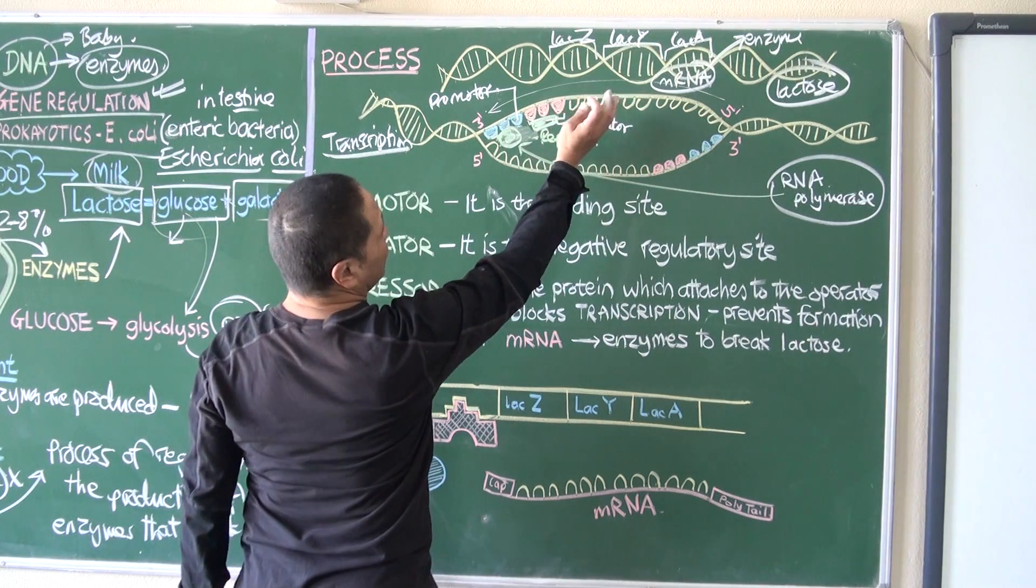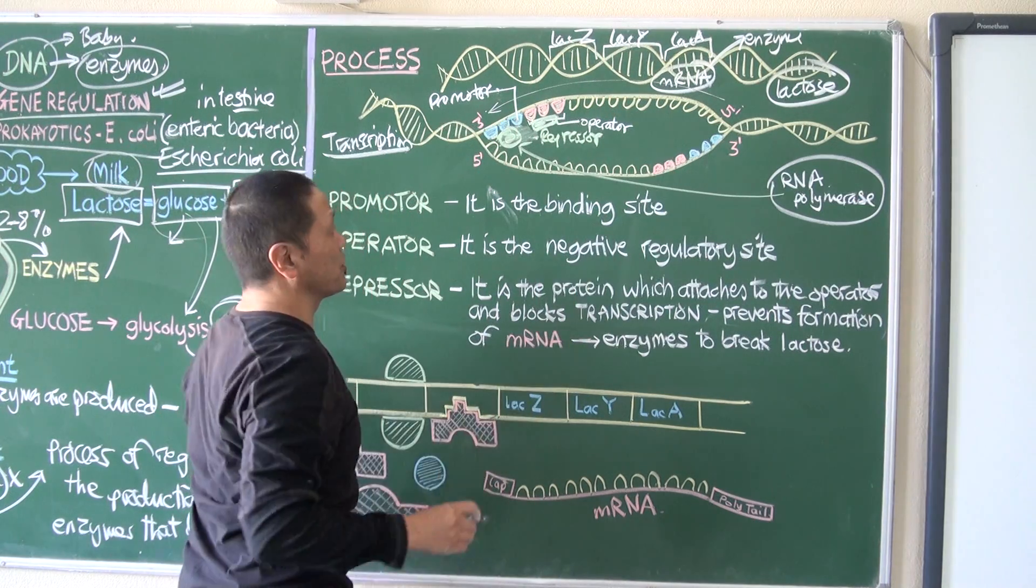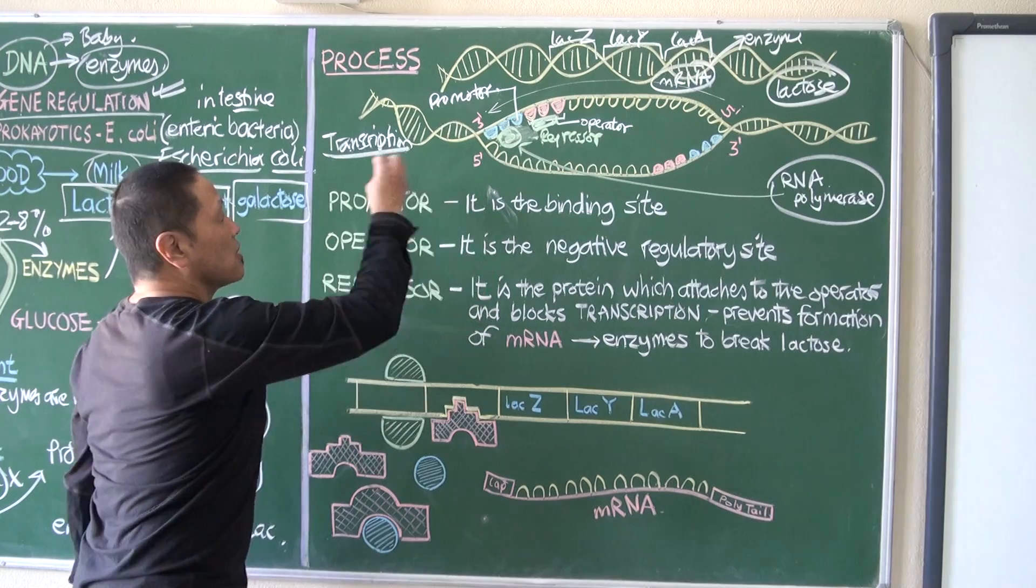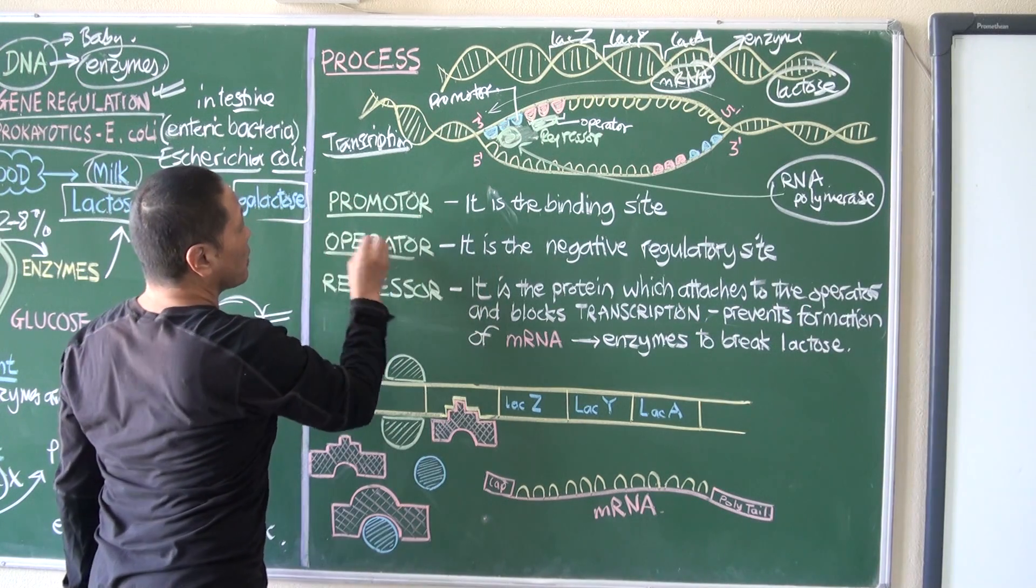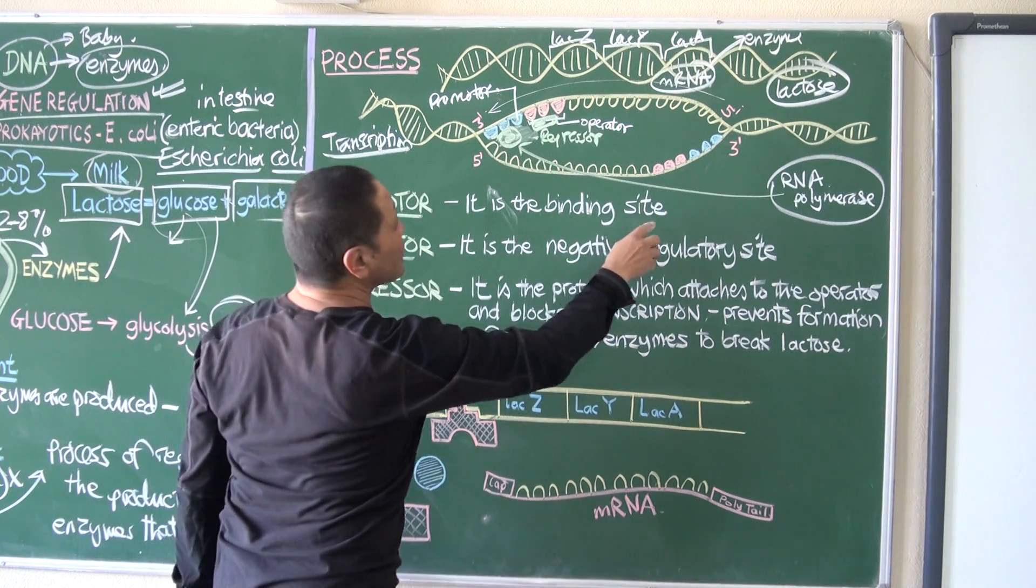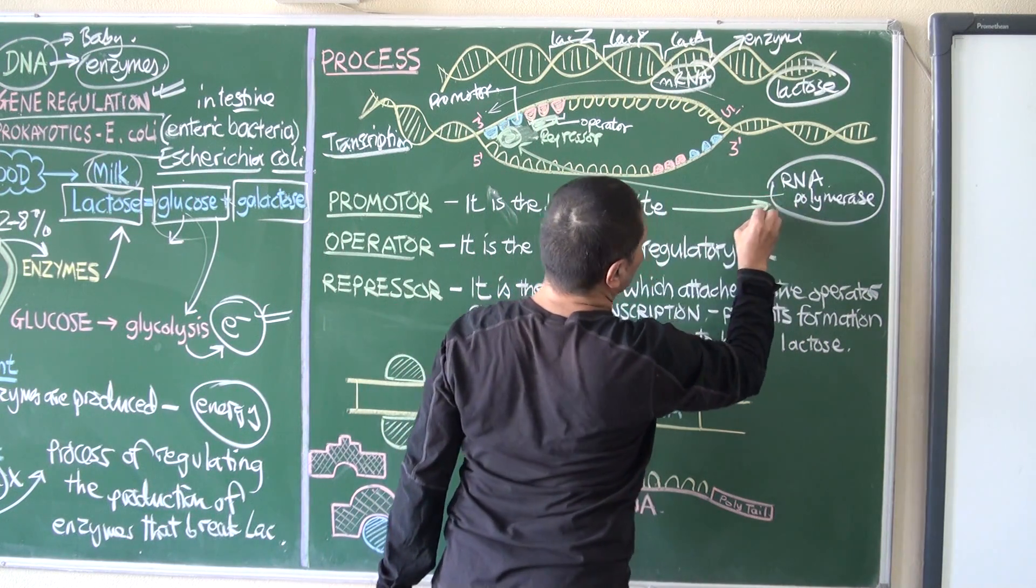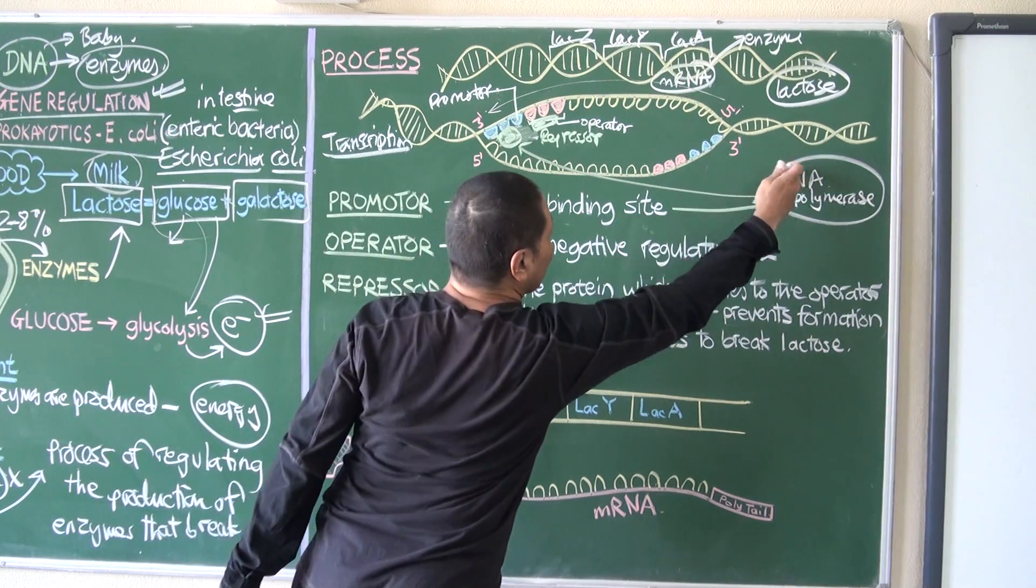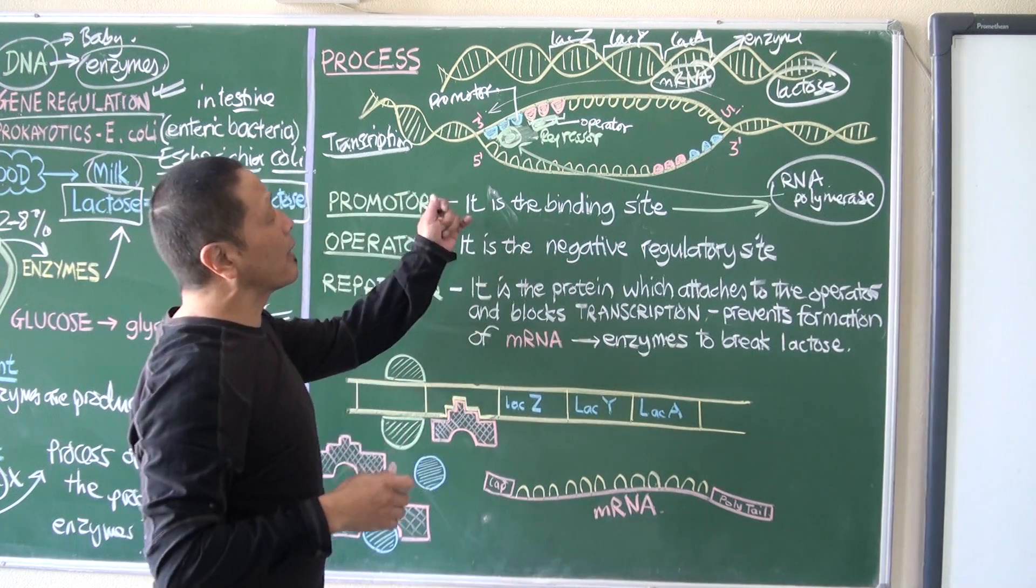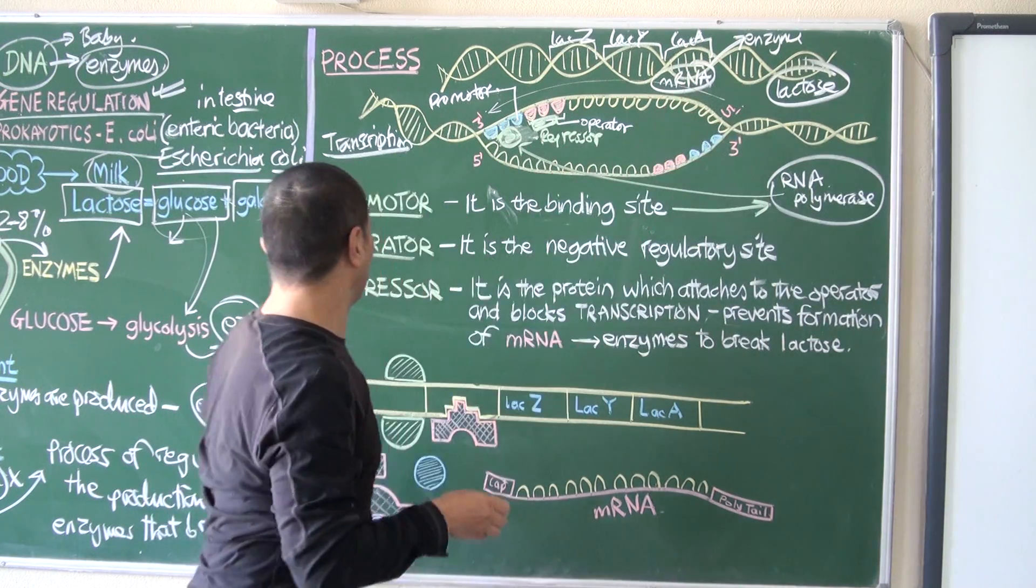Promoter: it is the binding site for RNA polymerase, so that it can produce mRNA. Operator: it is the negative regulatory site,